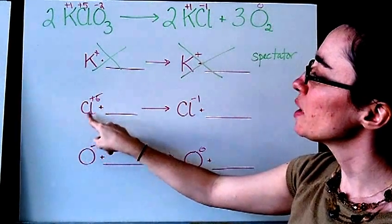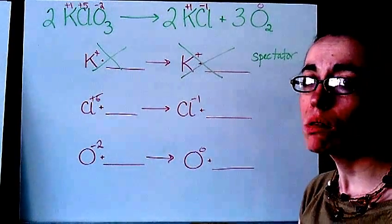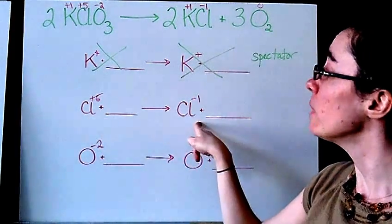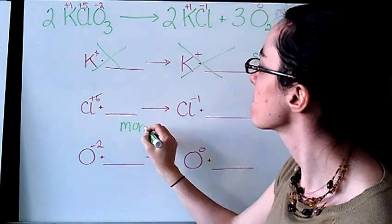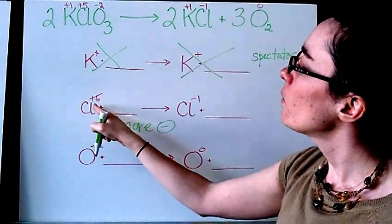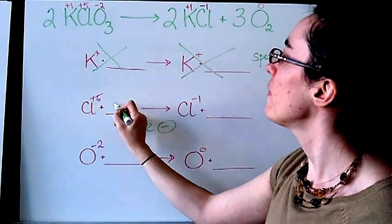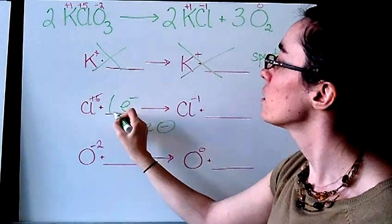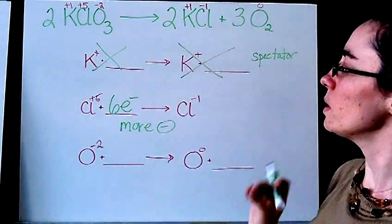My next element, my chlorine, has a positive five charge. Through the reaction, it ends up being negative one. So there are a whole lot of electrons moving around here. We went from rather positive to now we're on the negative. So since we got more negative, that means that we gained electrons. So if I went all the way from positive five down through the number line through the zero all the way down to negative one, that means that there are certainly some electrons that are being gained. And in fact, there are six of them.